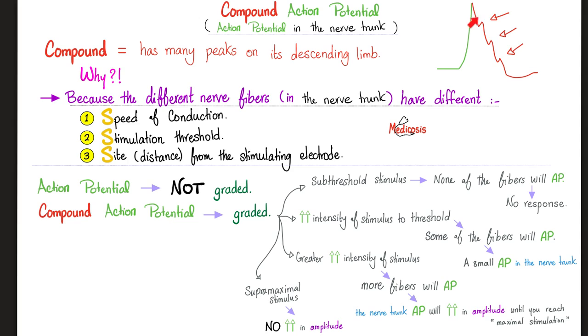Why do you call it compound? Because it has many peaks on its descending limb. Why do we have many peaks on the descending limb? Because you remember that ulnar nerve? It has many, many, many individual nerve fibers. And each fiber has a different speed of conduction. Each fiber has its stimulation threshold. And each fiber has a different distance from the stimulating electrode. The distance between the nerve fiber and the electrode is different. Some nerves are closer to the electrodes. Others are far away from the electrodes.